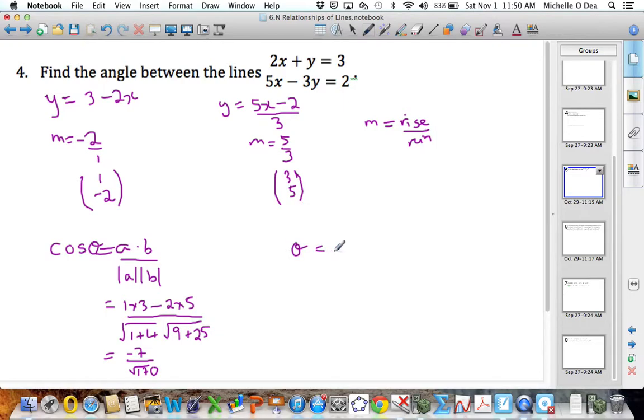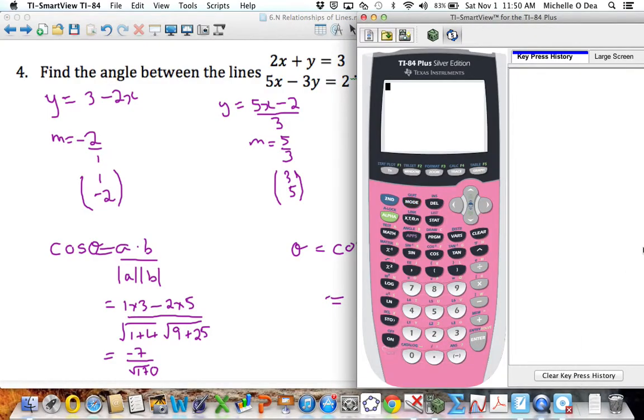And then of course we need theta by itself, so we do inverse cos of minus 7 over root 170. Then just putting that into the calculator.